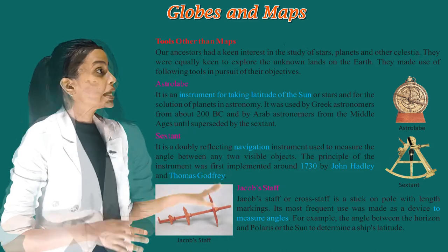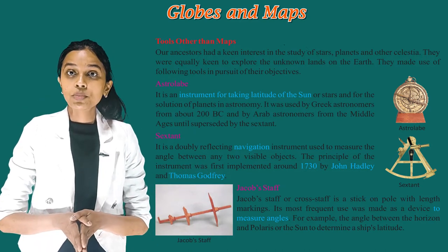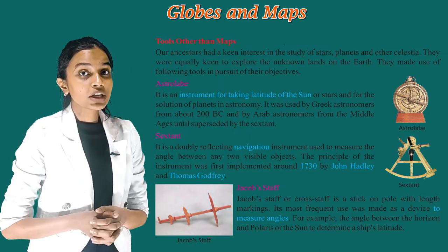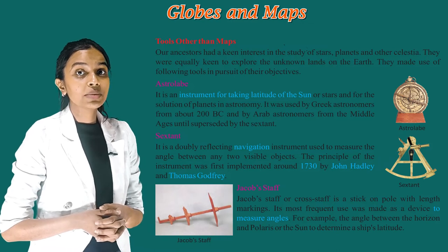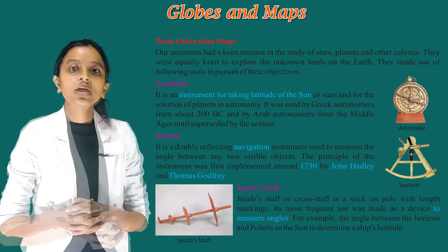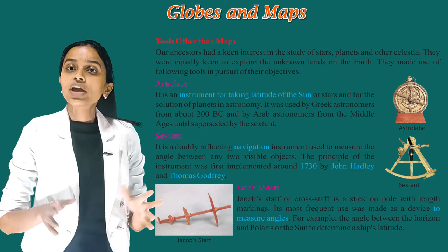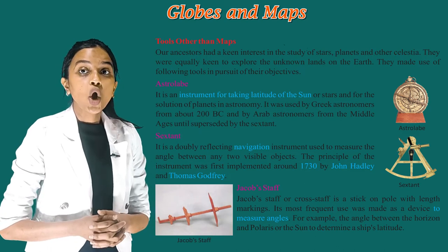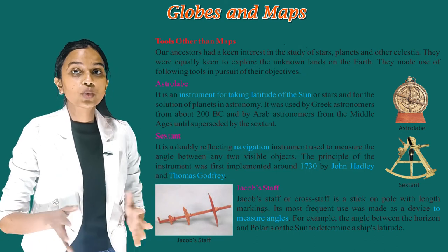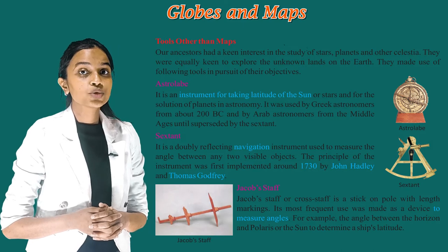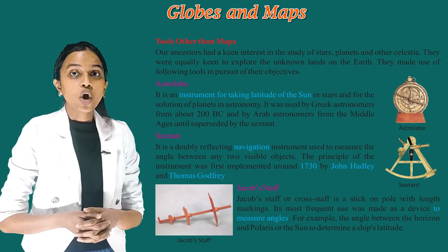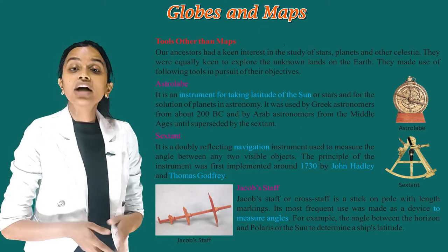The Sextant is a doubly reflecting navigation instrument used to measure the angle between any two visible objects. The principle of the instrument was first implemented around 1730 by John Hadley and Thomas Godfrey. Jacob Staff, or Cross Staff, is a stick or pole with length markings. Its most frequent use was as a device to measure angles — for example, the angle between the horizon and Polaris or the sun, to determine a ship's latitude.